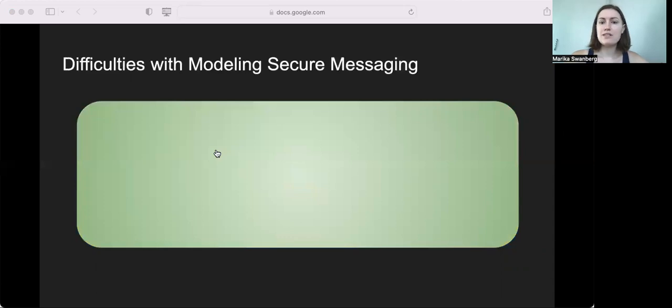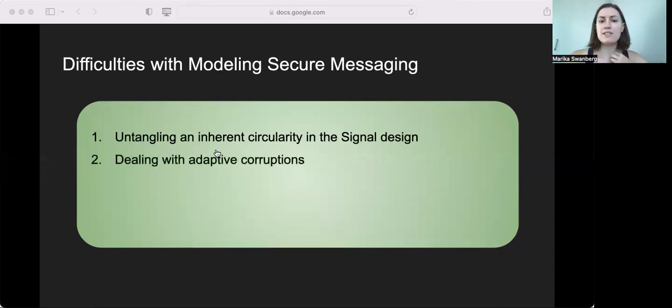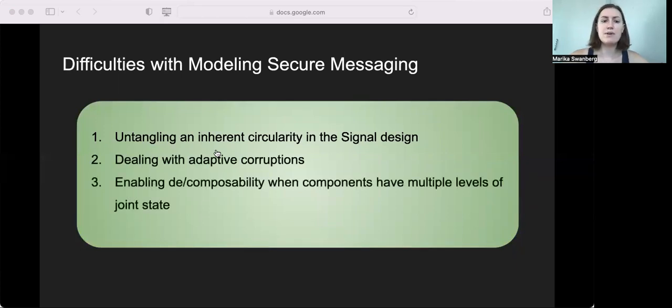All right, so in this process, we need to get around a number of technical difficulties. In this brief talk, I'll just mention two of them. One is untangling Signal's inherent circularity, and the second one is dealing with adaptive corruptions. For details on this third point, see our paper.